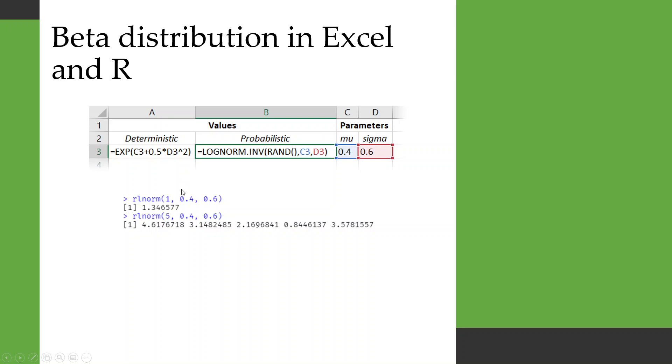And in R, you use the rlnorm function. The first argument is the number of random variants you want out. And then it's the mu and the sigma parameters.